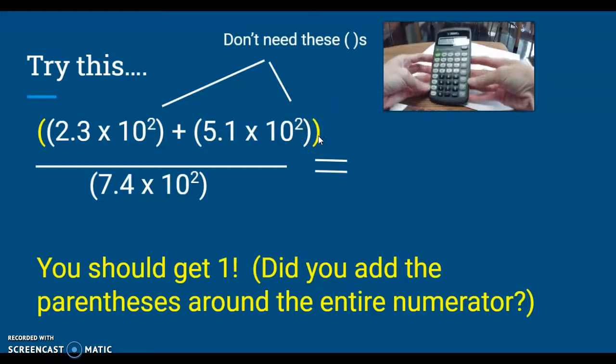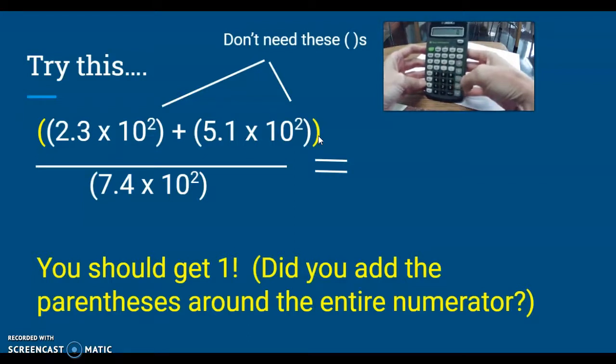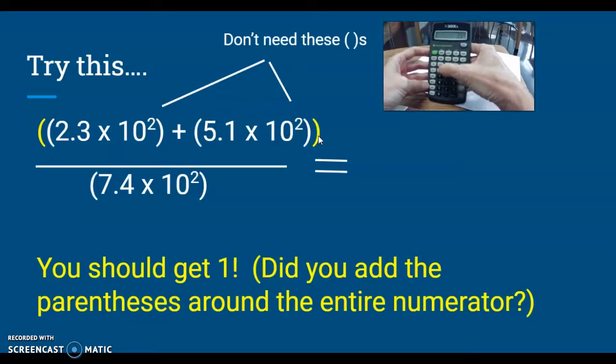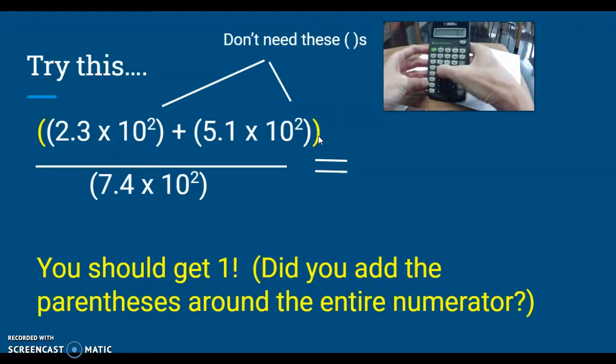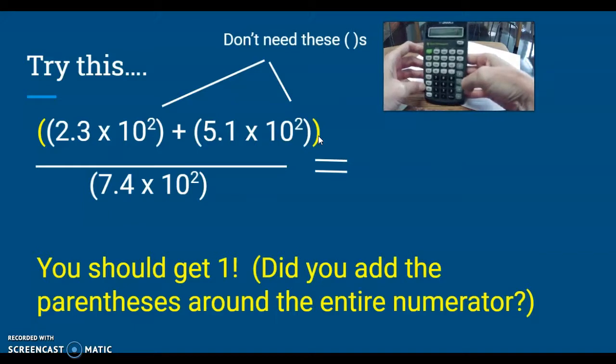What you would do for this is you're going to hit open parentheses. You can't see it on the screen, but right above the zero there's a little parentheses symbol that shows up. Then you're going to hit 2.3 exponent 10 to the second plus 5.1 exponent 10 to the second. And now you're going to hit close parentheses. Then divide it by 7.4 exponent times 10 to the second. And now we hit equals. If you do it correctly, you should get a 1.